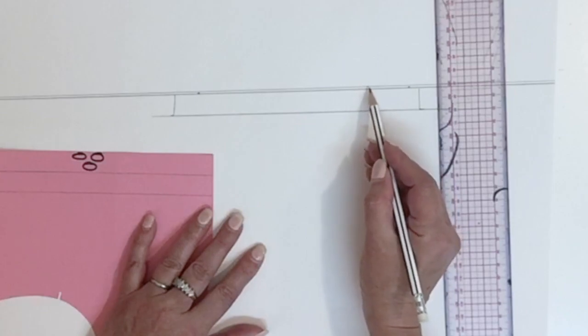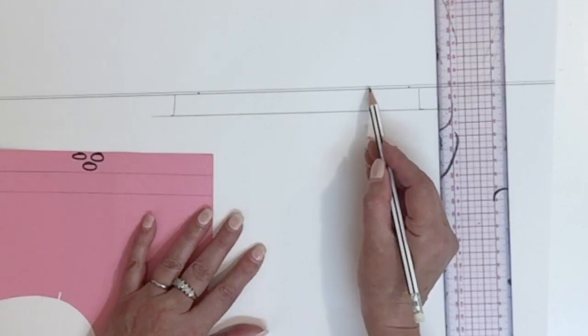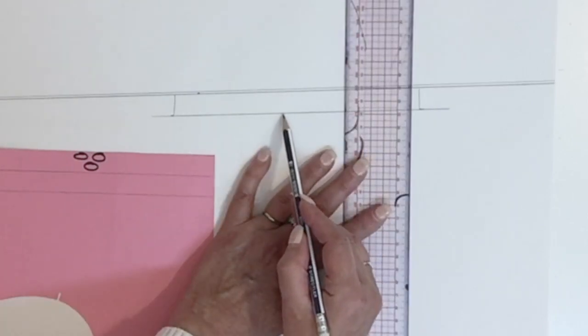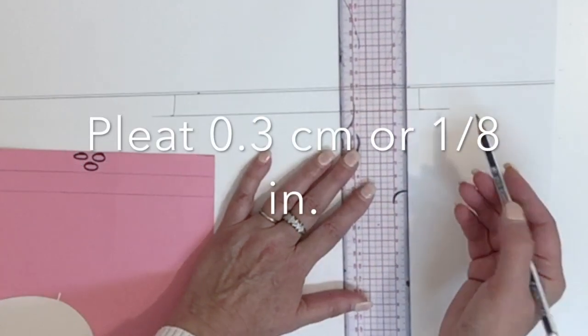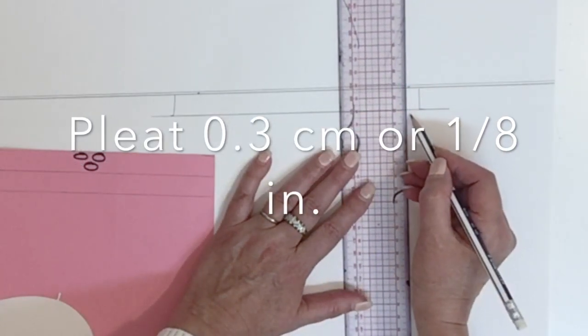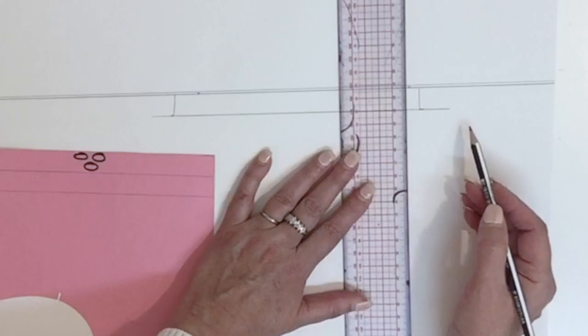Now the first pleat we did was half of a pleat, so I did it 1.5 millimeters. Now this pleat is going to be a complete pleat, so it should be at 3 millimeters. So you're going to mark it twice and trace your line.